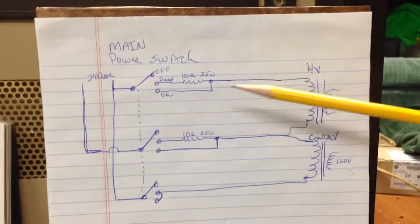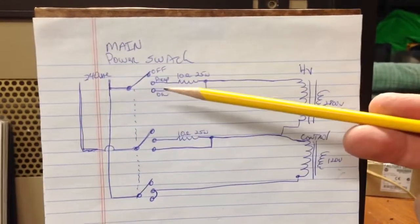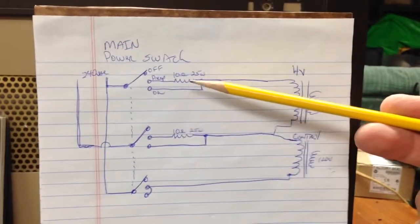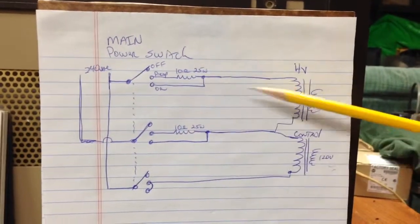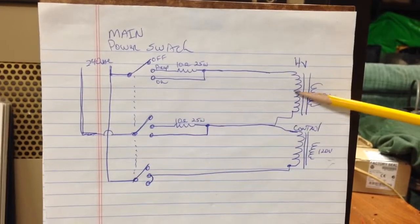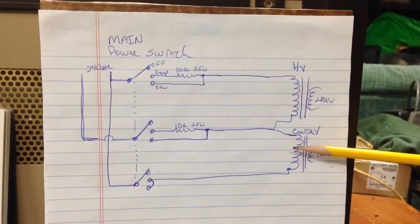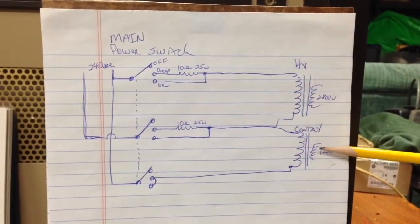What I'm going to do with it. So you'll have the off position and you'll have the pre-off position which you'll shunt with two 10 ohm 25 watt resistors. And that accomplishes your step start for your high voltage as well as the step on the control transformer.